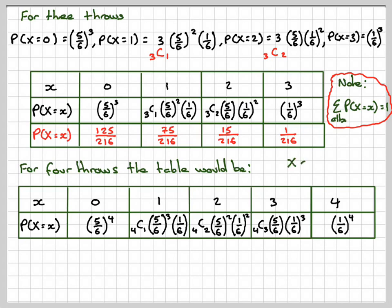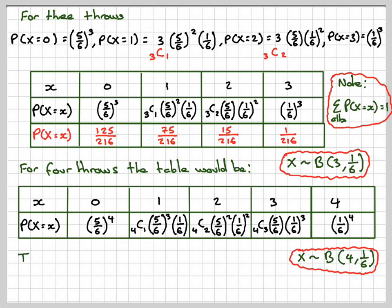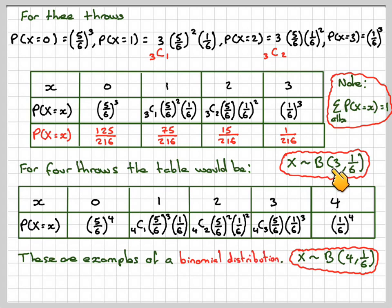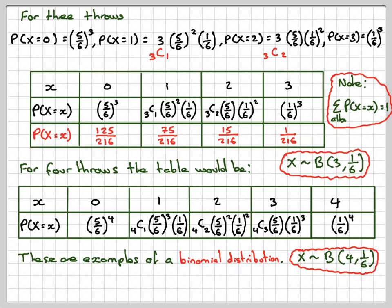These are all examples of what's known as a binomial distribution. X here would be binomially distributed with n equals 3 throws and probability of success one-sixth; and the extension example would be binomially distributed with 4 throws and probability of success one-sixth. These are examples of the binomial distribution, which we're going on to look at further. I hope you've understood, and thank you very much for watching.